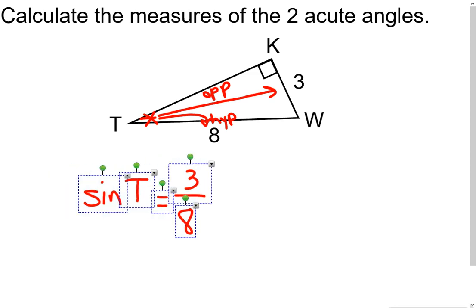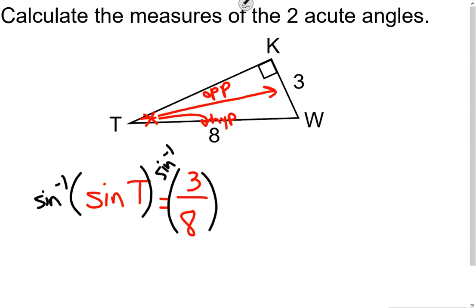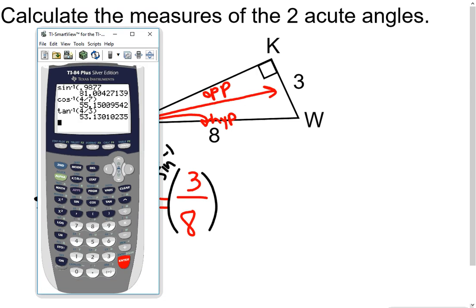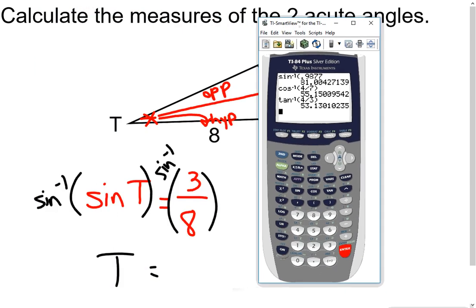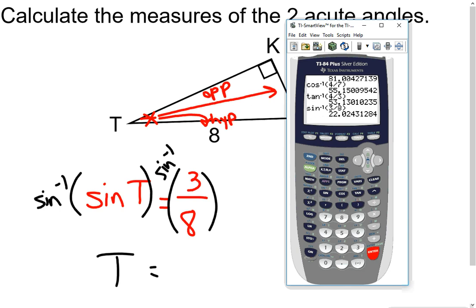Now I need to solve that equation. To get T by itself, I take the inverse of sine on both sides — the inverse of sine and sine cancel, leaving T on the left. On the right, I use the calculator: push second, sine, type in the fraction 3/8, and push enter. We find the measure of angle T is 22.02 degrees.